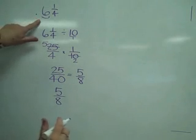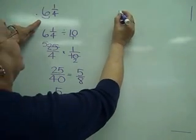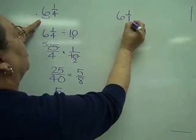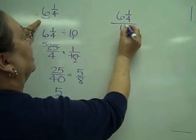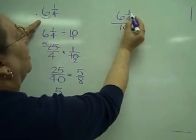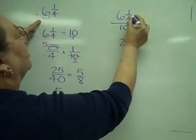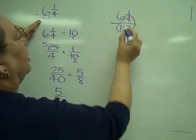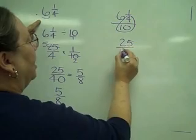Now let's do the shortcut method. If I have 6 and 1/4 tenths, I have 6 and 1/4 tenths. So I'm going to multiply. 4 times 6 is 24, plus 1 is 25. Multiplying the two bottom numbers, 4 times 10 is 40.